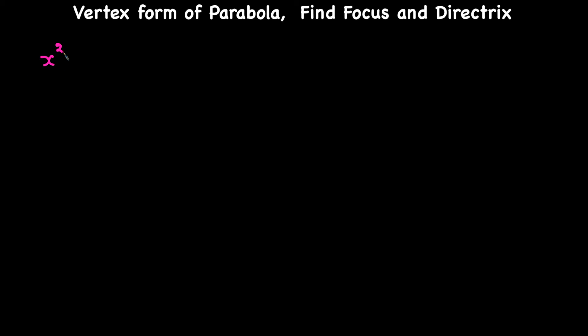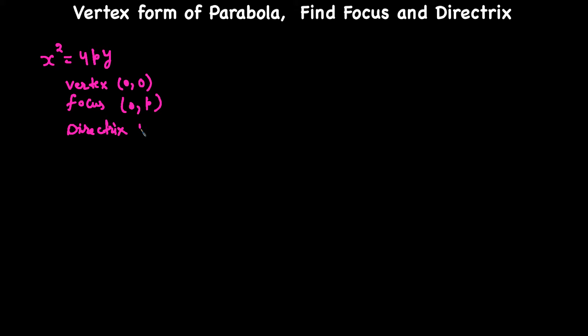First of all let's go over the standard form of a parabola in terms of P, where the vertex is (0,0). Like in the previous video, the equation was X² = 4PY, the vertex was (0,0), the focus was (0, P), and the directrix was the line Y = -P.